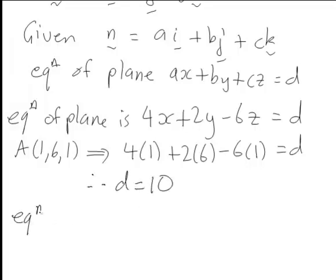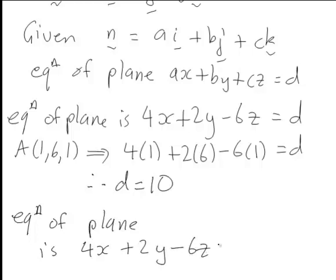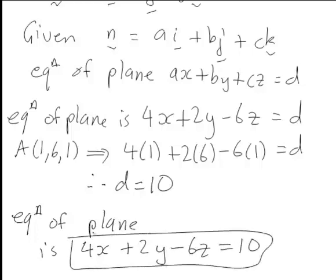Hence the equation of the plane, substituting that in, is going to be 4x plus 2y minus 6z equal to 10. Or any scalar multiple of that equation such as 2x plus y minus 3z equals 5 is also a form of the equation of the plane.